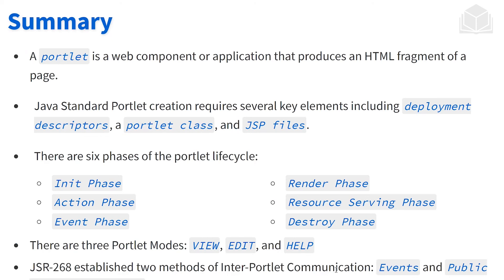Let's summarize the lifecycle and the attributes of a portlet. A portlet is a web component or application that produces an HTML fragment of a page. Java standard portlet creation requires several key elements including deployment descriptors, a portlet class, and JSP files. There are six phases of the portlet lifecycle: the init phase, the render phase, the action phase, the resource serving phase, the event phase, and the destroy phase. The main two phases we'll look at in development are the render and action phases. There are three portlet modes — view, edit, and help — as defined by the Java standard portlet. Finally, JSR 286 established two methods of interportlet communication: events and public render parameters. That wraps it up for this video, and I will see you in the next video.